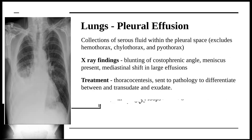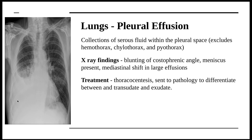Moving on to the lungs — pleural effusion and lung carcinoma. Pleural effusion is the collection of serous fluid in the pleural space; this excludes hemothorax, chylothorax, and pyothorax. X-ray findings show blunting of the costophrenic angle — as seen here, the left costophrenic angle is prominent but the right is absent — and the lung takes on a meniscus shape. This is usually treated with thoracocentesis.